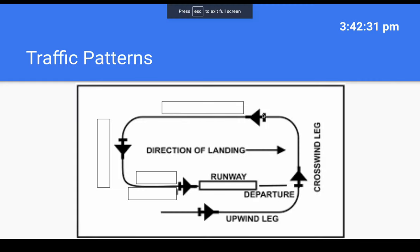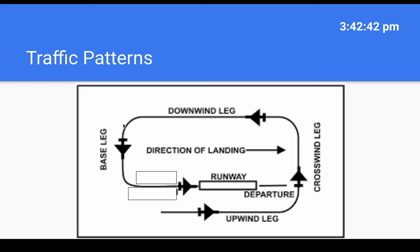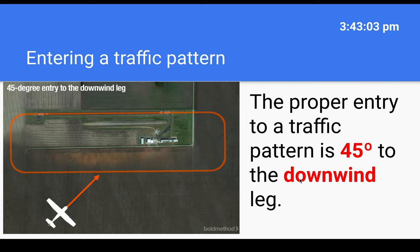Looking at the pattern diagram, the aircraft makes left turns throughout. After upwind comes crosswind, then downwind — called left downwind — then a turn to base leg, also called left base. The last leg where you come in to land is simply called final approach. You don't say left or right on final; you say 'I'm on final approach for runway niner' or 'final approach for runway 20.' The proper way to enter a traffic pattern is 45 degrees to the downwind leg — that way you get to see all of the pattern.